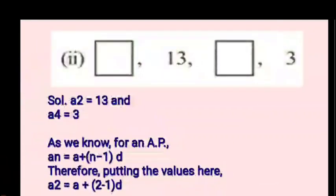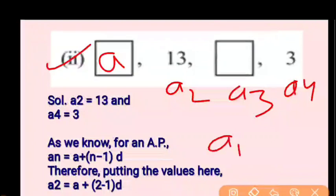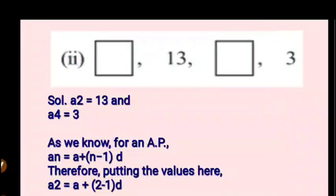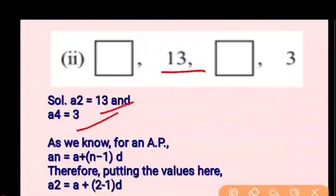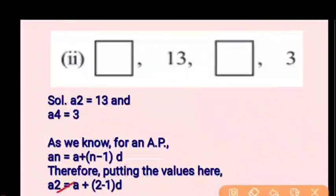Now let's see the second part of question 3. Here A2 = 13 and A4 = 3 are given, and A1 and A3 are missing. We know the formula AN = A + (N−1)D, so we will form equations for A2 and A4.